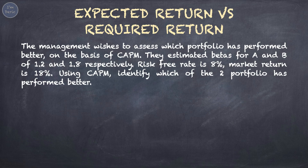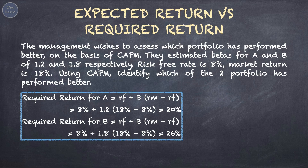Next, management wishes to assess which portfolio has performed better on the basis of CAPM. They estimated betas for A and B of 1.2 and 1.8 respectively. The risk-free rate is 8% and the market return is 18%. Using the CAPM formula, the required return for A is 20%, while the required return for B is 26%. Based on CAPM, portfolio B performed better.